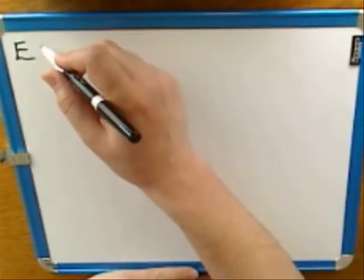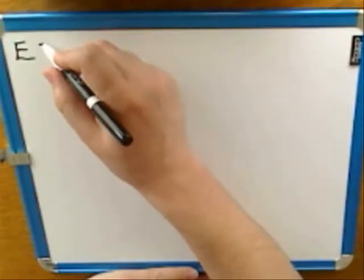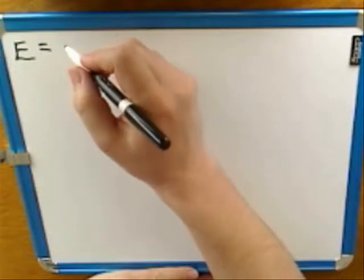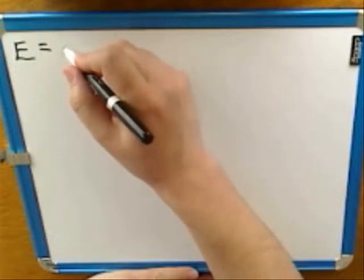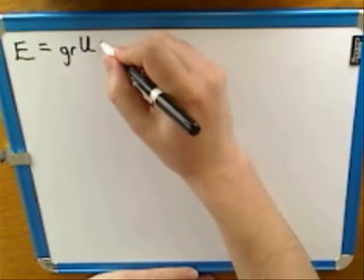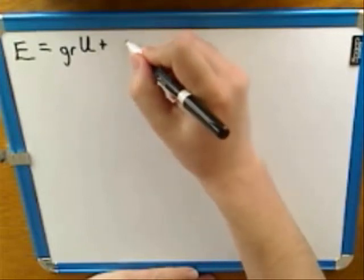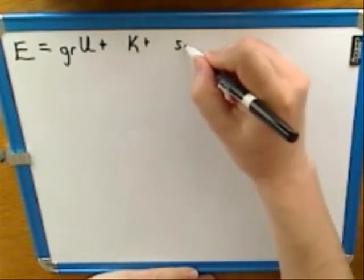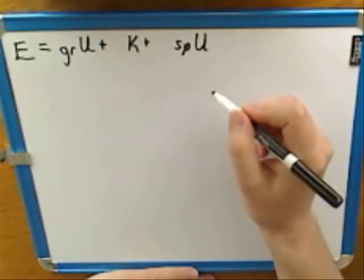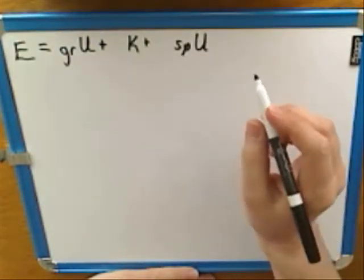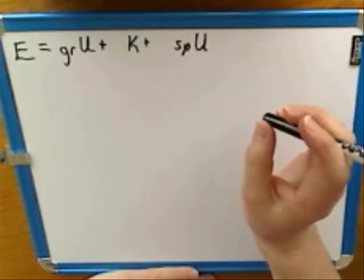Gravitational potential energy. Very good. And then there's kinetic energy. Good. And then there's spring energy, but that wouldn't apply here. That's right. So those are some of the types of energy we've discussed. Very good.